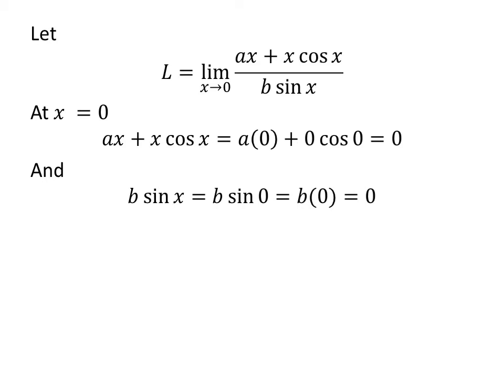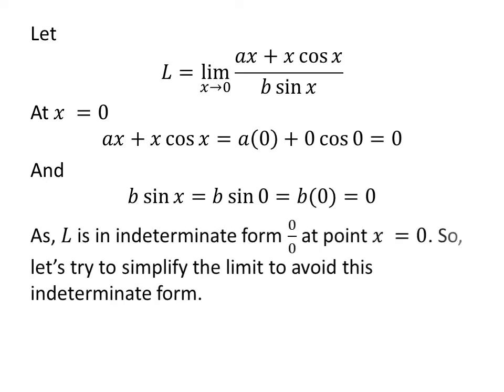At point x equals 0, the numerator ax + x cos(x) equals 0, and the denominator b sin(x) equals 0. As L is in indeterminate form 0/0 at point x equals 0, to avoid this indeterminate form, let us further simplify the limit.